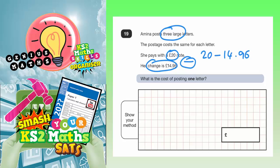What is probably easier to do there is actually to count back up from £14.96 up to £20. And the difference will be what you would get if you subtracted it. So, from £14.96 up to £15 will be four pence. And that will take us to £15.